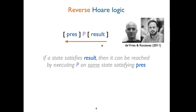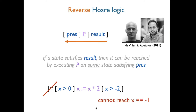If I take the triple from the previous slide — the same code and same assertions — under this different interpretation, it's not valid. The reason is that a state where x equals minus one satisfies the postcondition, but it cannot be reached from any state satisfying the precondition. So in a sense, this is an under-approximation of the states that can be reached — a subset rather than an over-approximation as in classical logic.